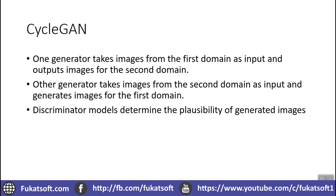What happens in a CycleGAN? One generator takes an image from the first domain as input and outputs images for the second domain. Taking the example of zebras and horses: it takes a horse image as input and outputs a zebra image. The discriminator model checks the plausibility of the generated image. There are two discriminator networks which we work with.